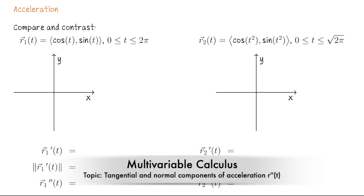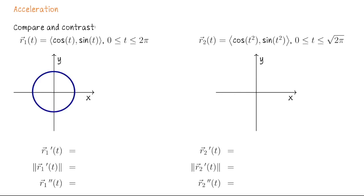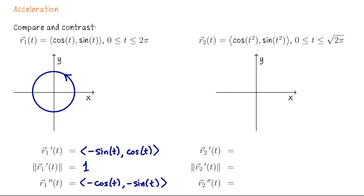Here we have R1 of t, the familiar parametrization of the unit circle: cosine of t, sine of t, for t values going from 0 to 2π. That circle goes around once in the counterclockwise direction. The velocity vector is (−sin t, cos t), which is a unit length velocity vector, so the speed is a constant 1 — this is a unit speed parametrization. The acceleration vector is (−cos t, −sin t).